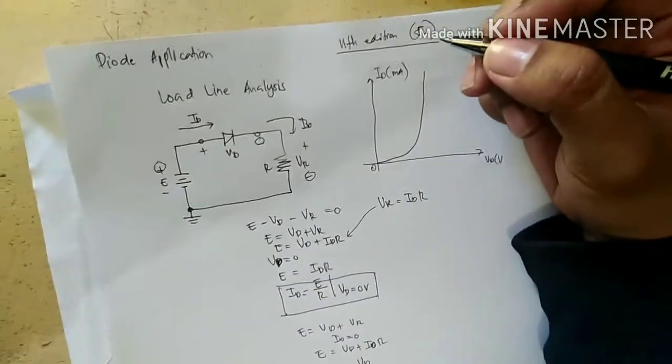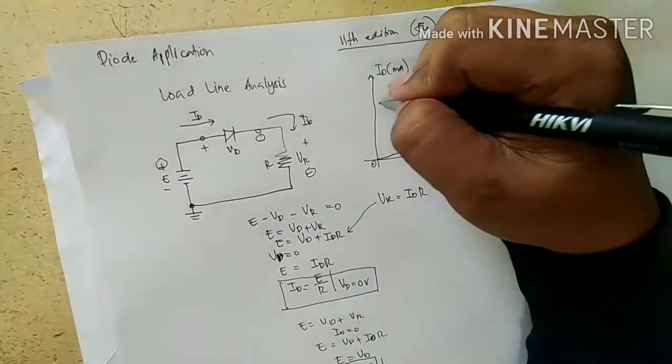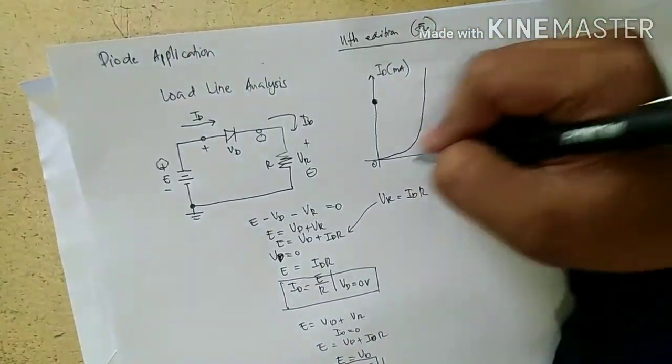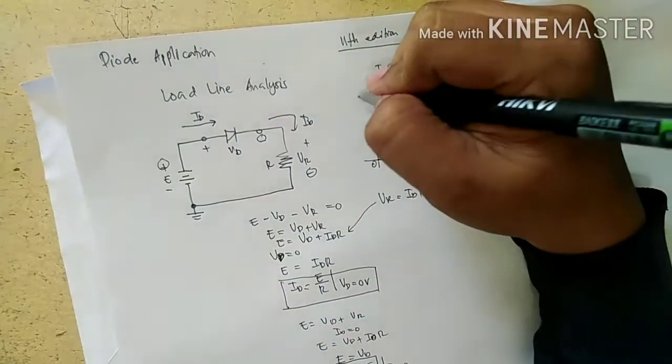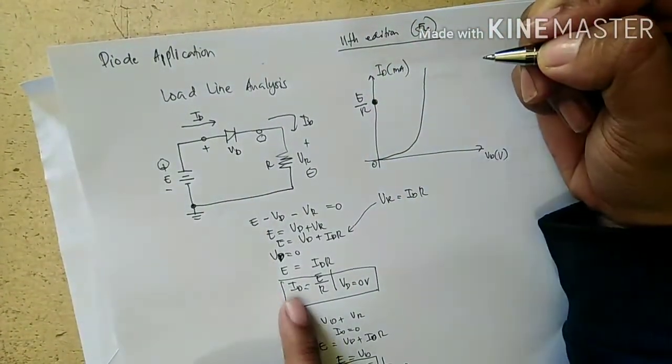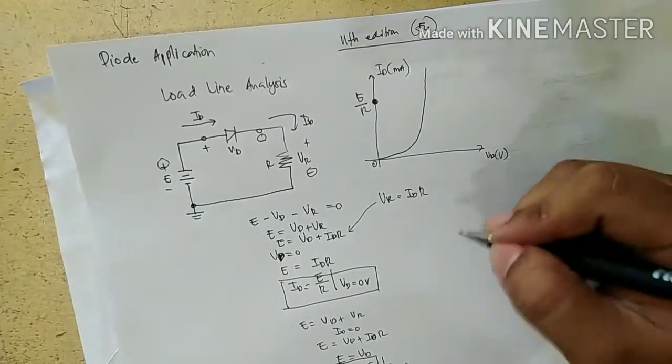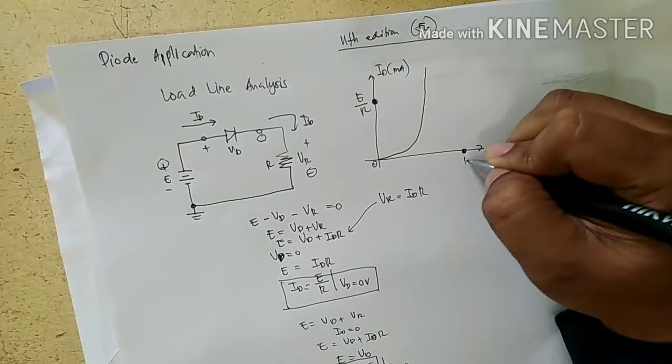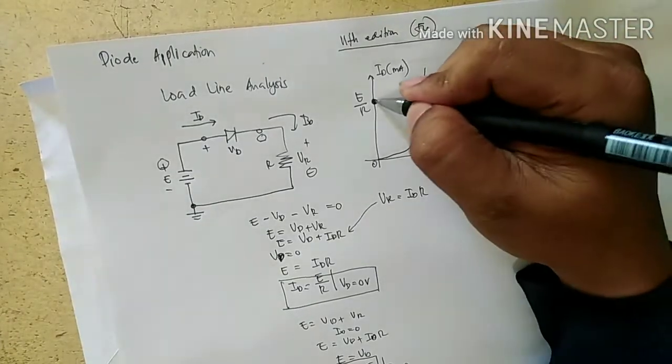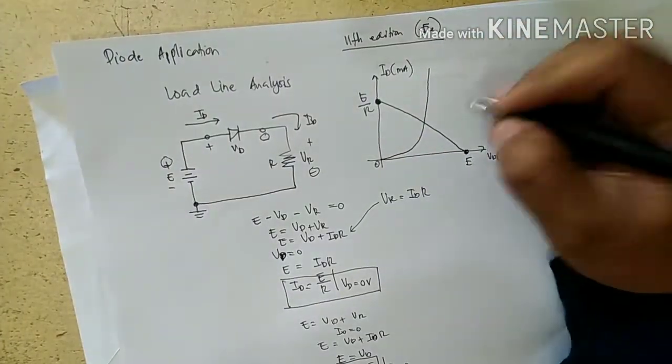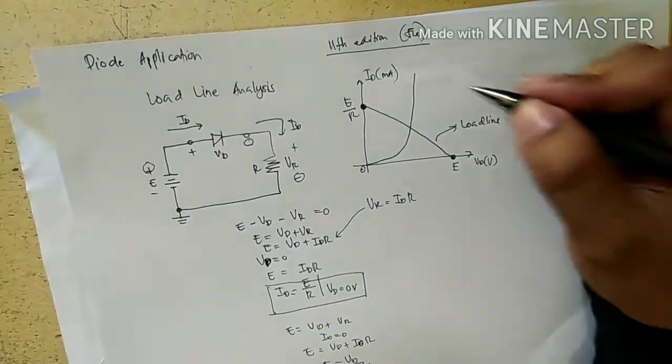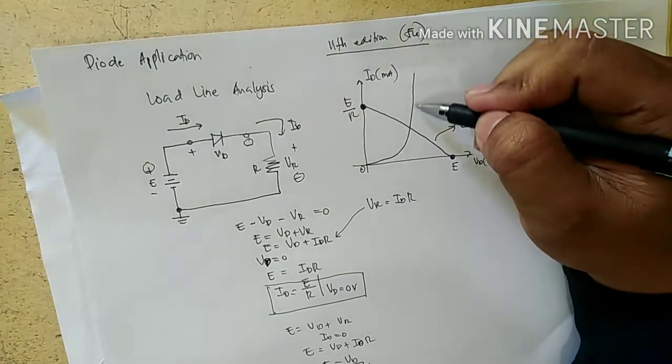If you plot this, this is ID axis, this is the voltage axis. So this is E over R, ID, and then this is E. Connect the dots. We call this one the load line.